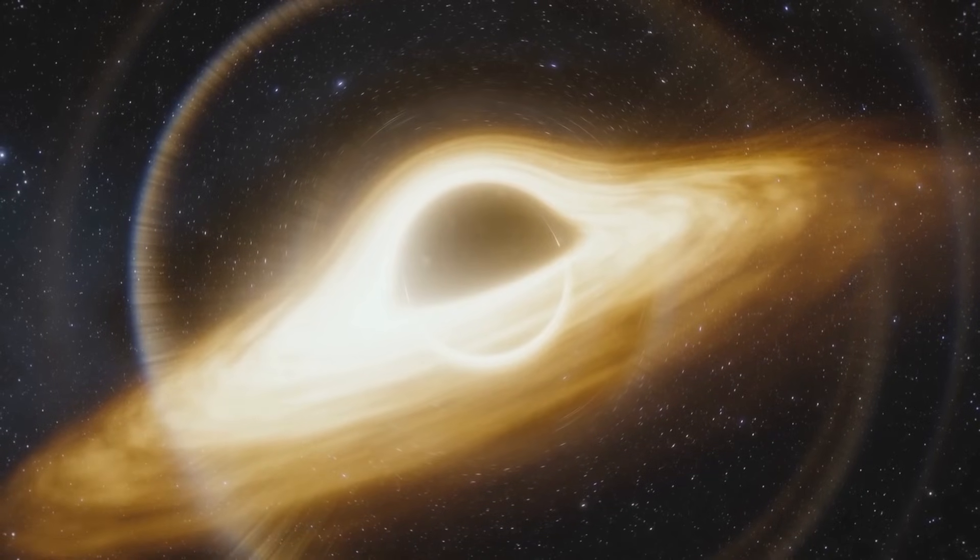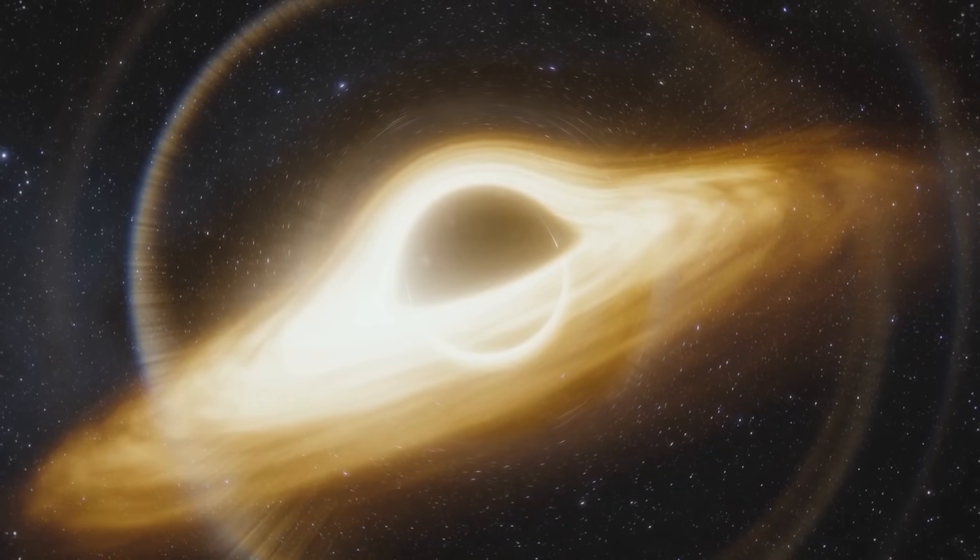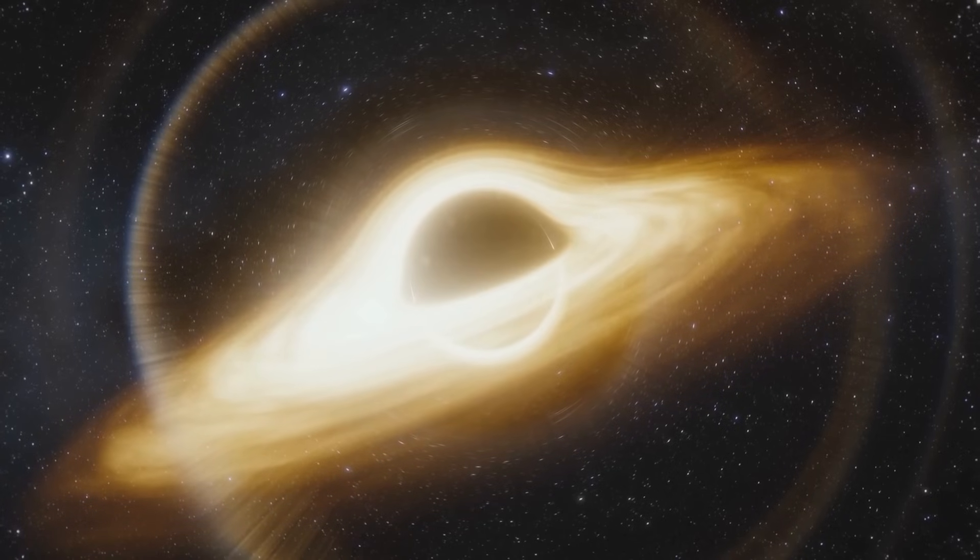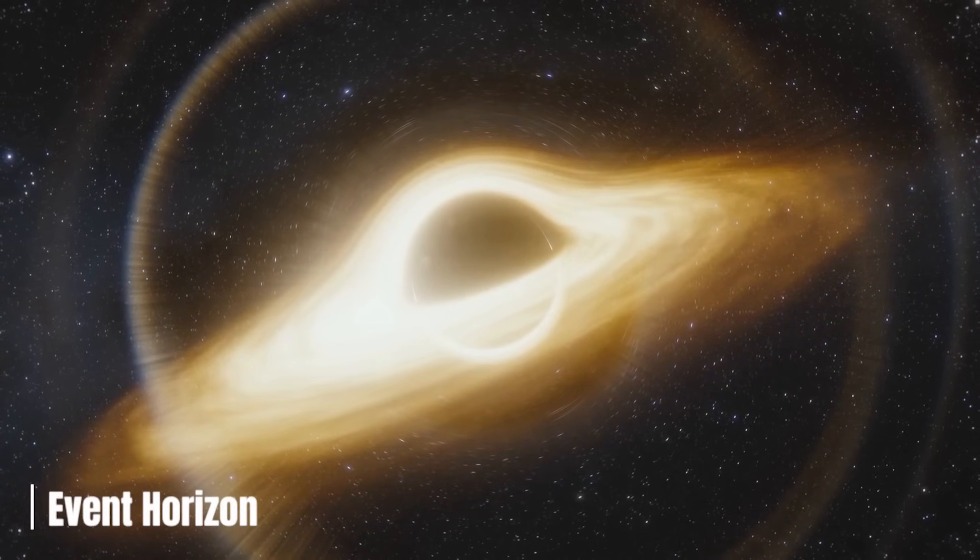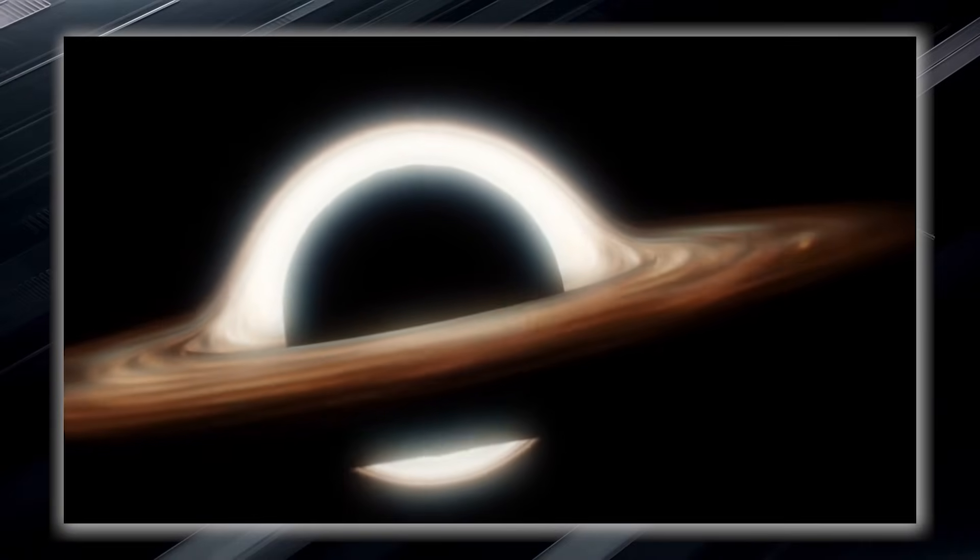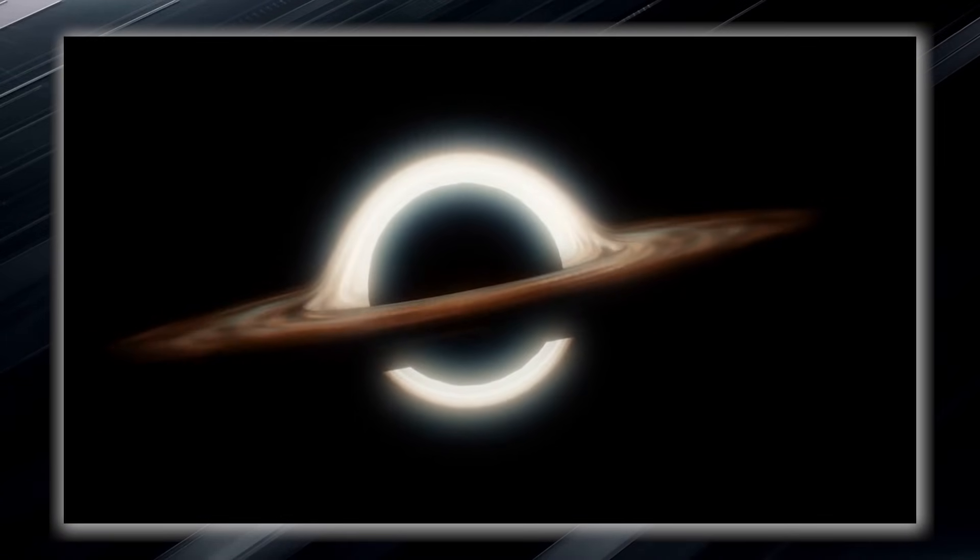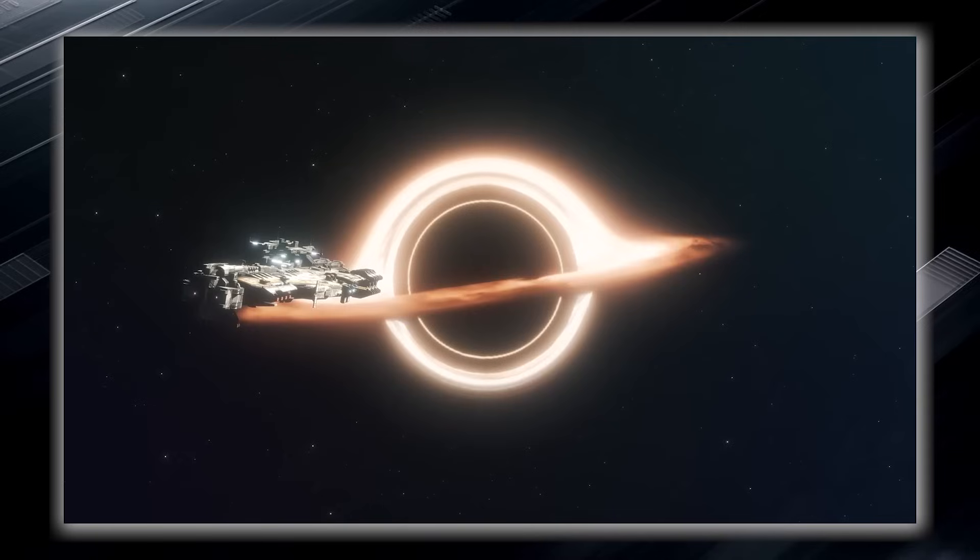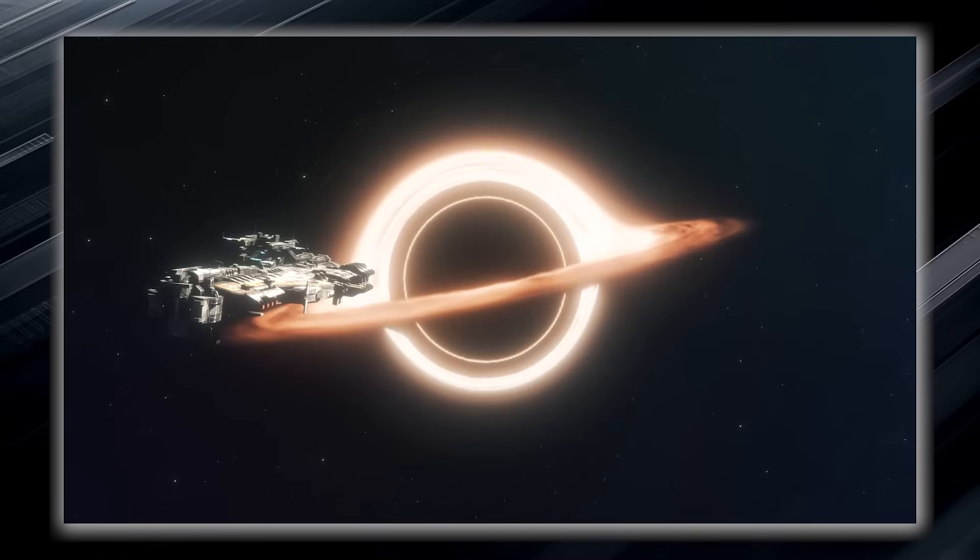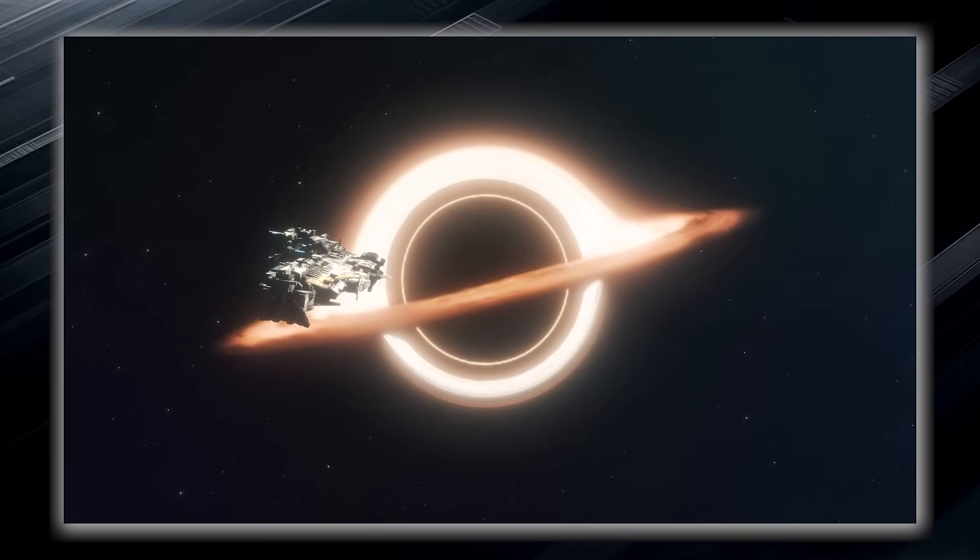This is where things become truly extraordinary. The gravitational pull near a black hole is so incredibly strong that it creates what is known as an event horizon. The event horizon is not a physical barrier, but rather a region where space gradually bends. It is an invisible boundary or point of no return. Once something, such as an unfortunate spacecraft or even light, crosses its boundary, it can never escape the clutches of the black hole.